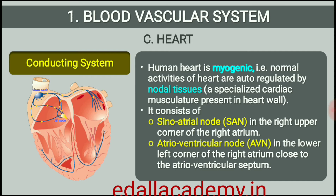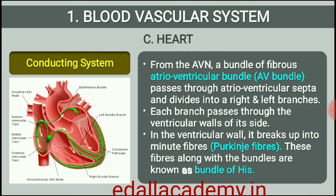A specialized cardiac musculature called the nodal tissue is also distributed in the heart (figure 18.2). A patch of this tissue is present in the right upper corner of the right atrium called the sinoatrial node (SAN). Another mass of this tissue is seen in the lower left corner of the right atrium close to the atrioventricular septum called the atrioventricular node (AVN). A bundle of nodal fibers, atrioventricular bundle (AVN bundle), continues from the AVN which passes through the atrioventricular septum to emerge on the top of the interventricular septum and immediately divides into a right and left bundle. These branches give rise to minute fibers throughout the ventricular musculature of the respective sides and are called Purkinje fibers. These fibers along with right and left bundles are known as bundle of His.